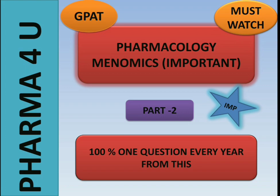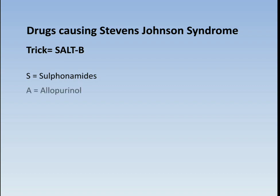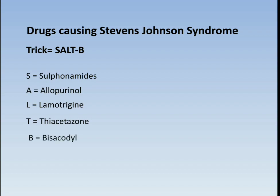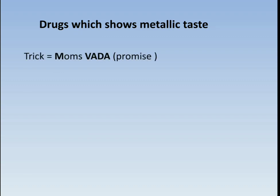Our first topic is drugs causing Stevens-Johnson Syndrome. The trick is SALT B, where S denotes sulfonamides, A denotes allopurinol, L denotes lamotrigine, T denotes thiacetazone, and B denotes bisacodyl. The trick is SALT B.